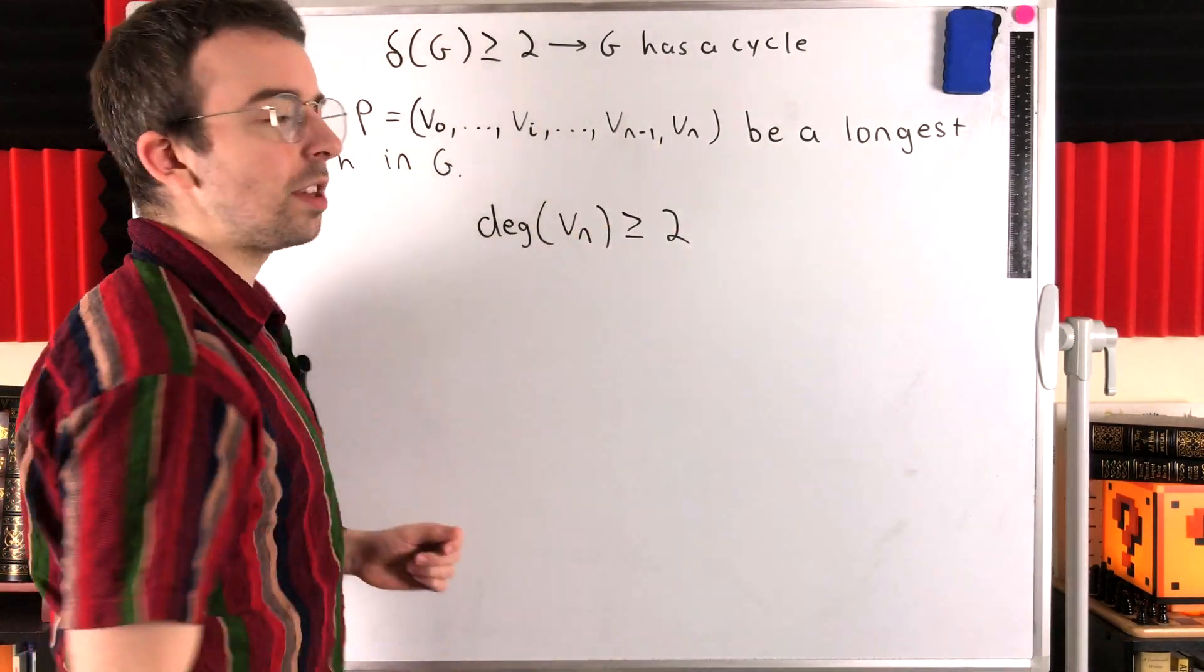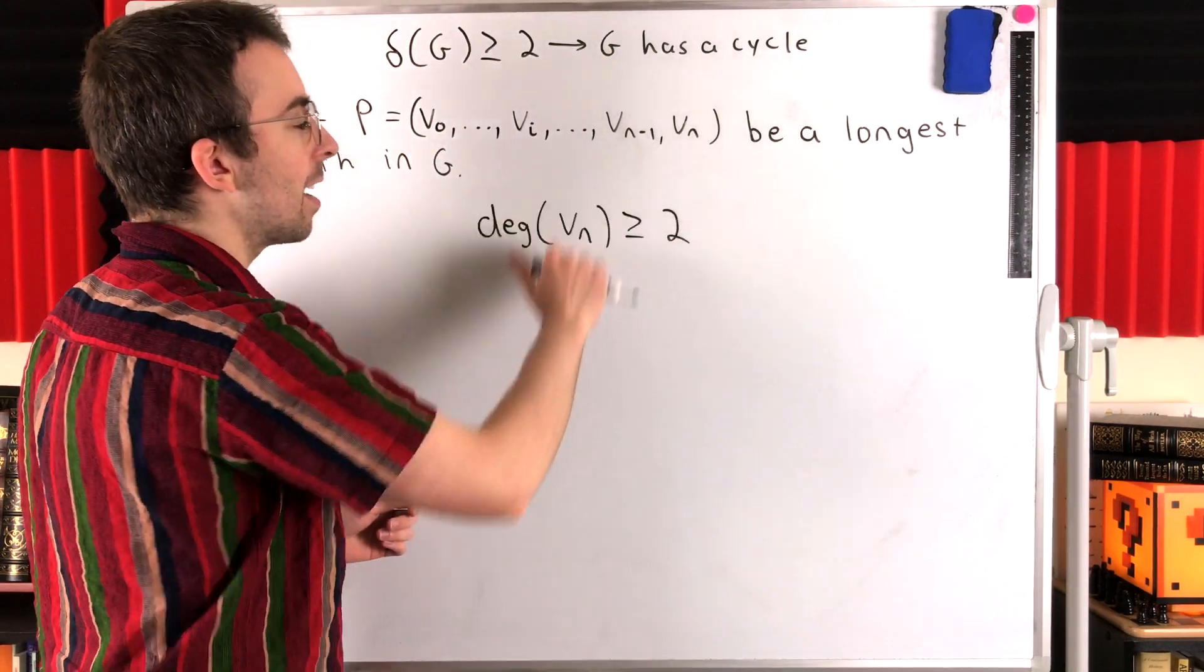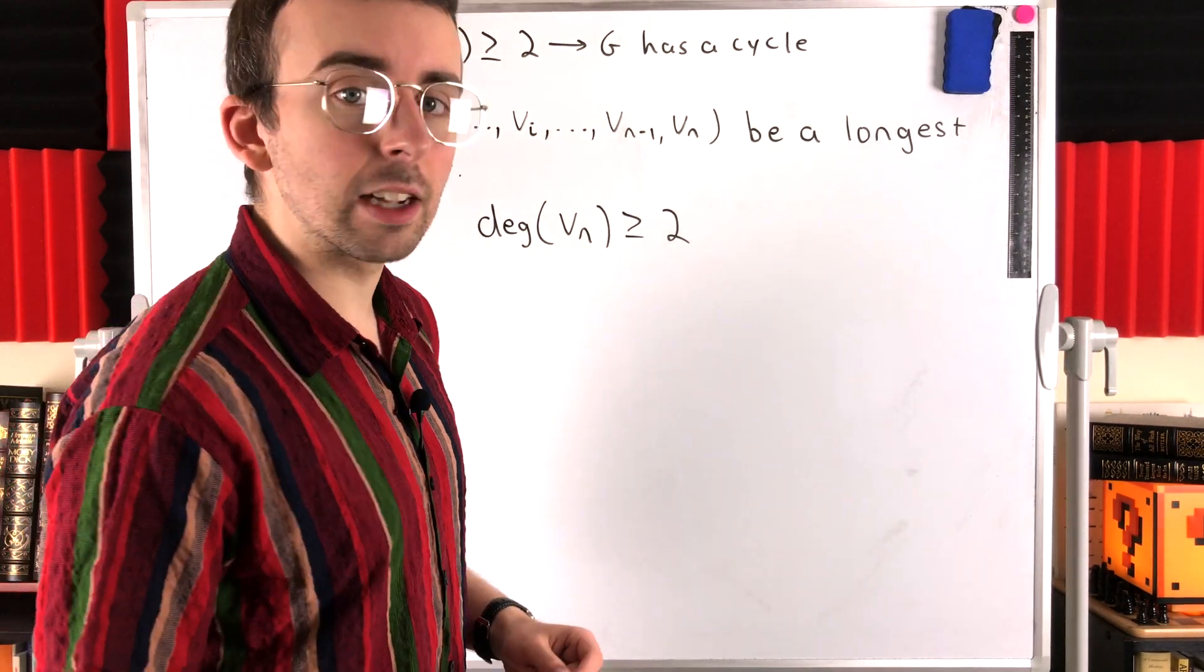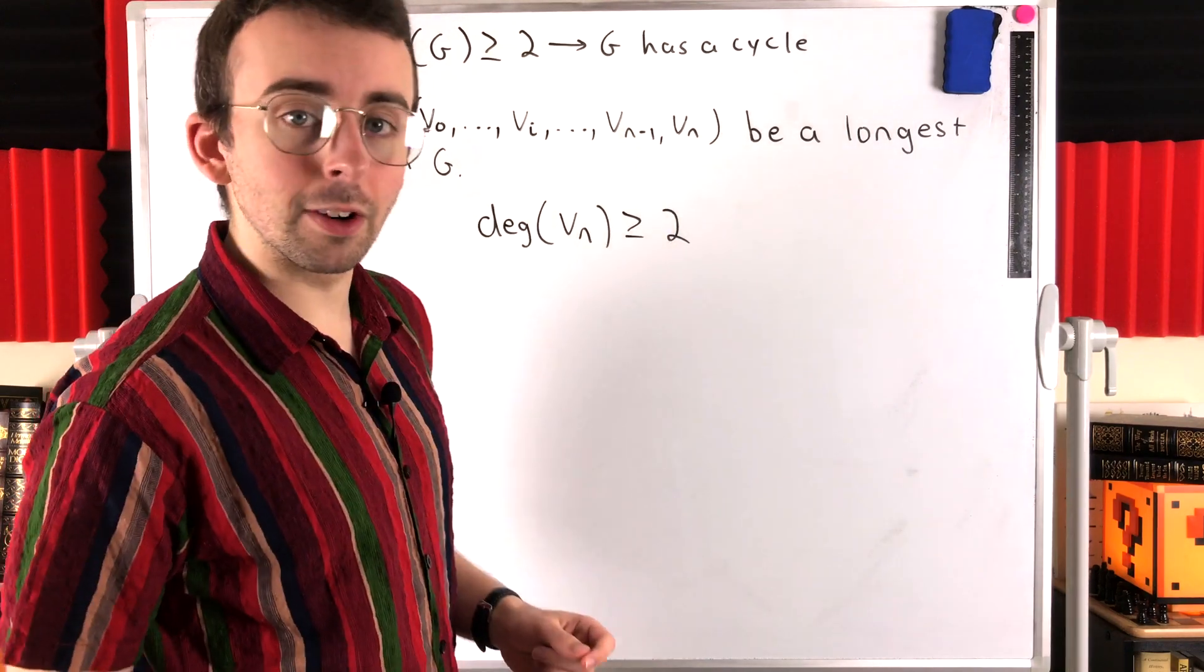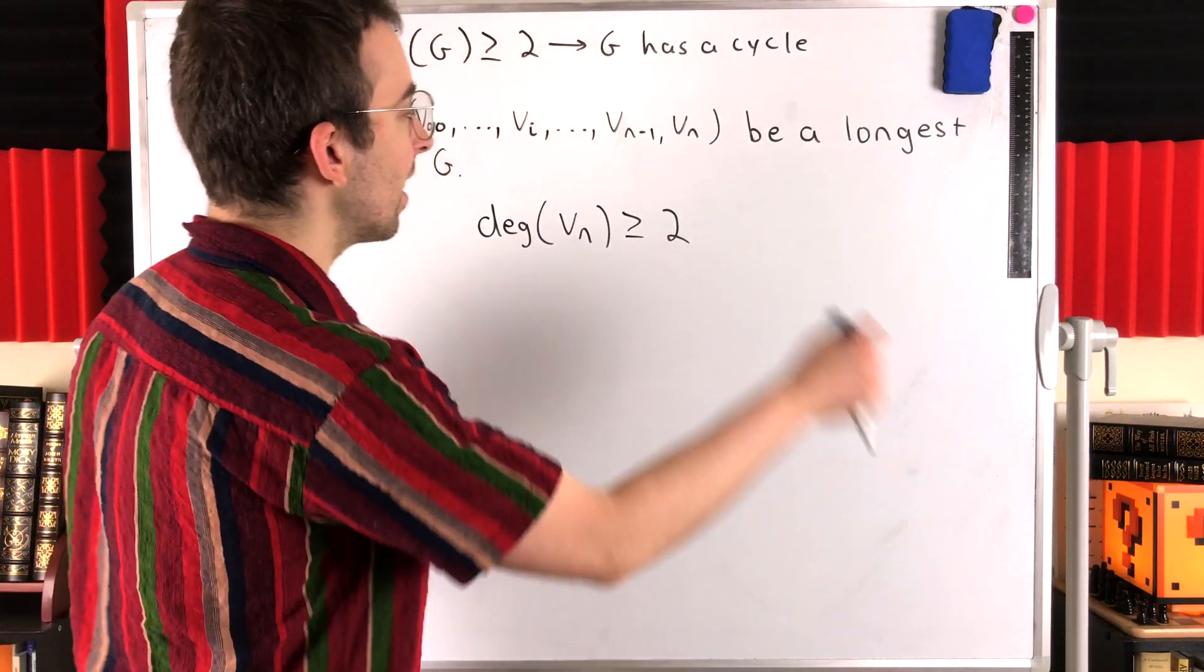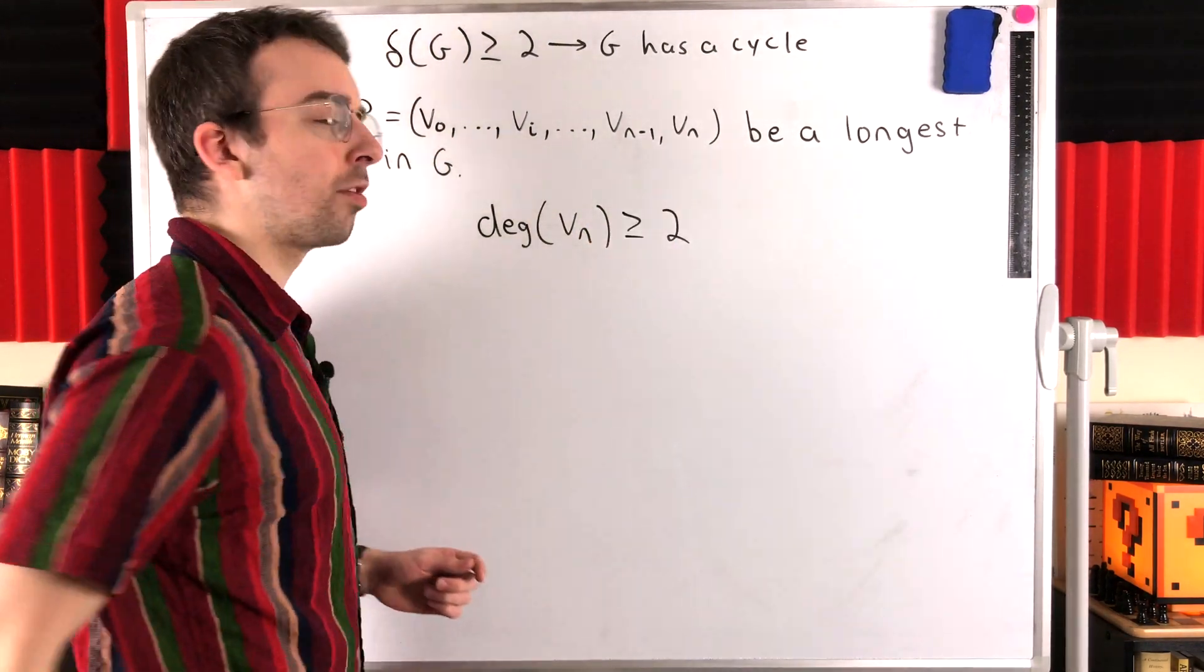We know that one of VN's neighbors is VN minus one. That's the preceding vertex in the path, because consecutive vertices in a path are adjacent.